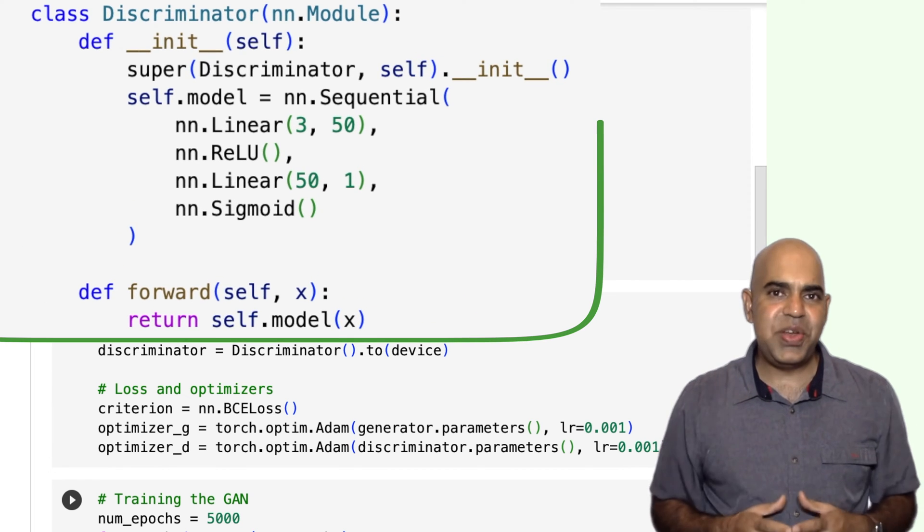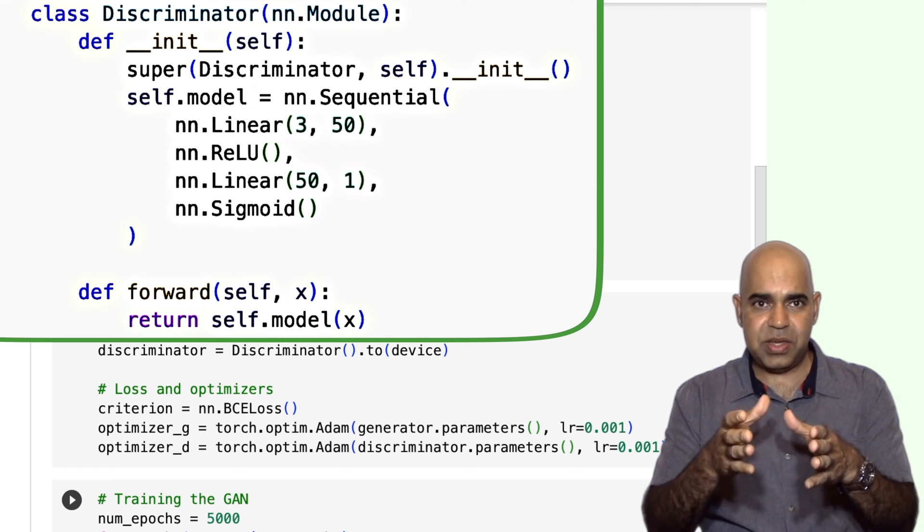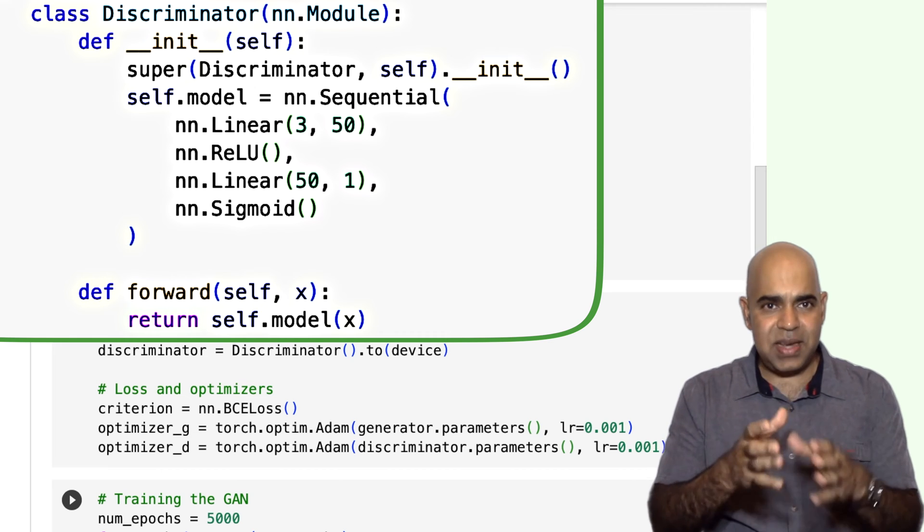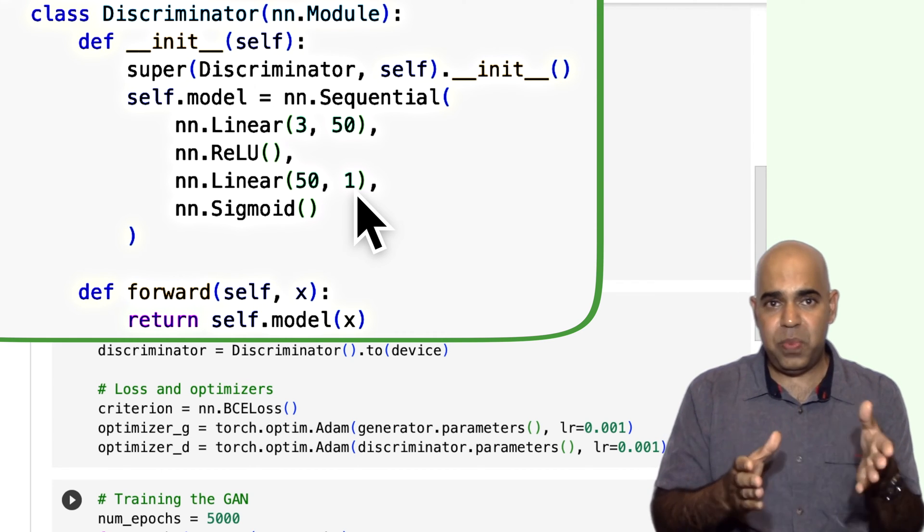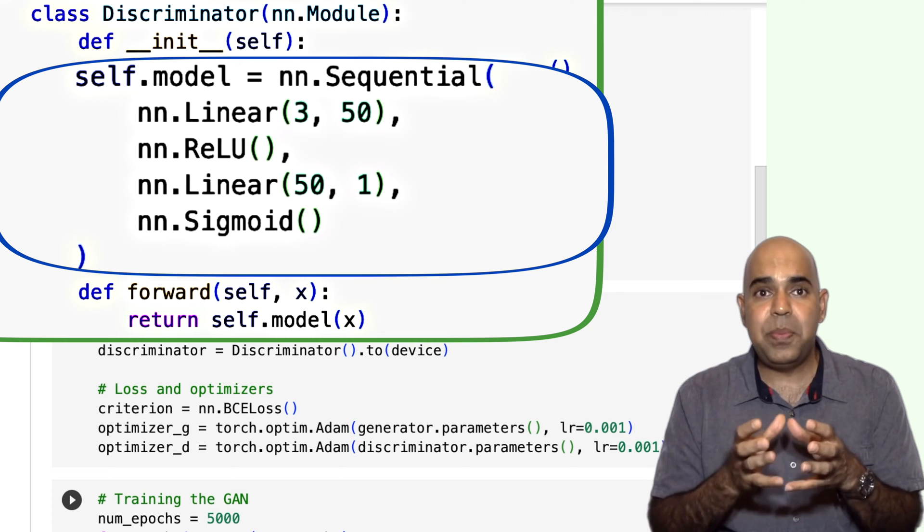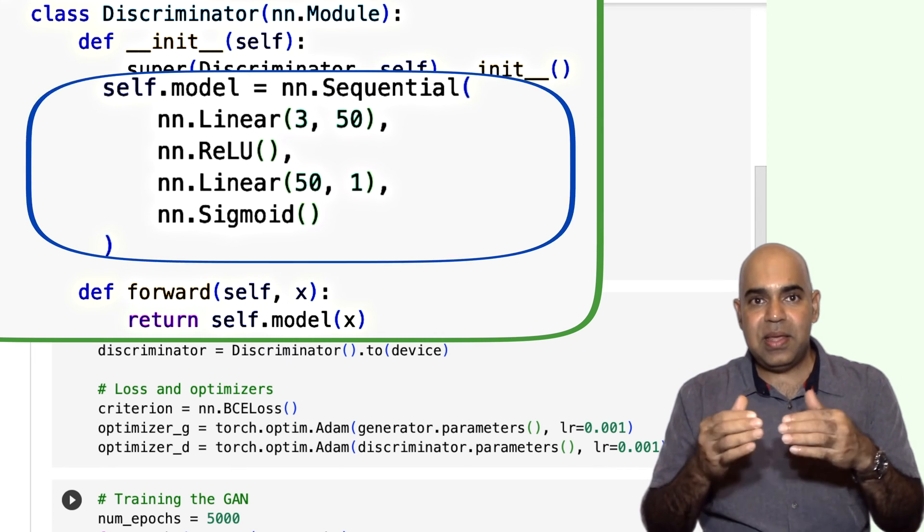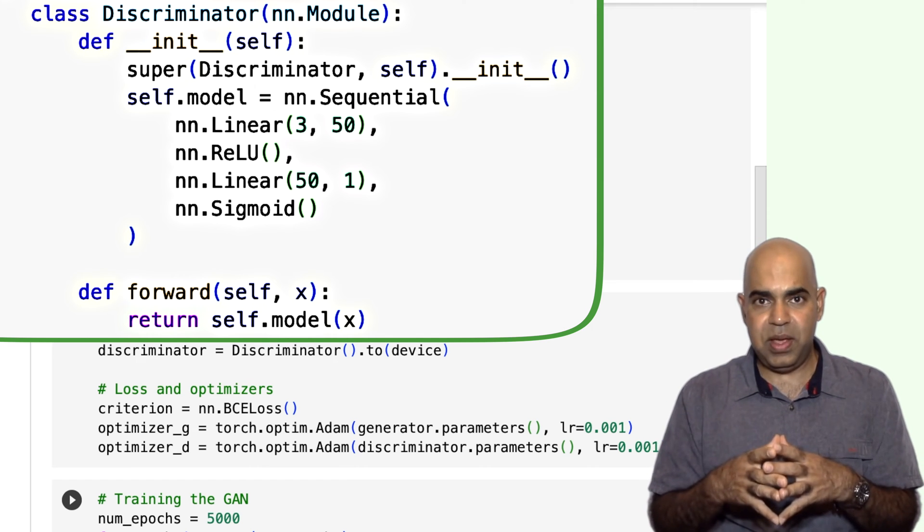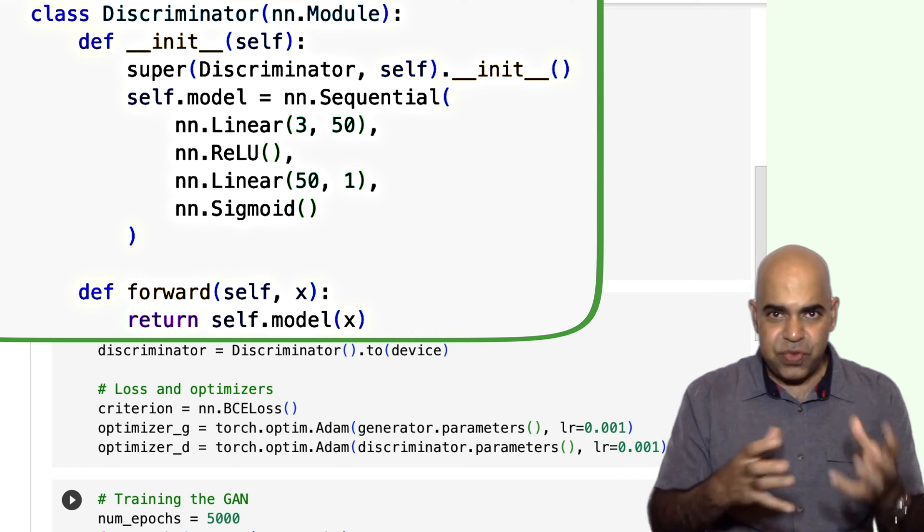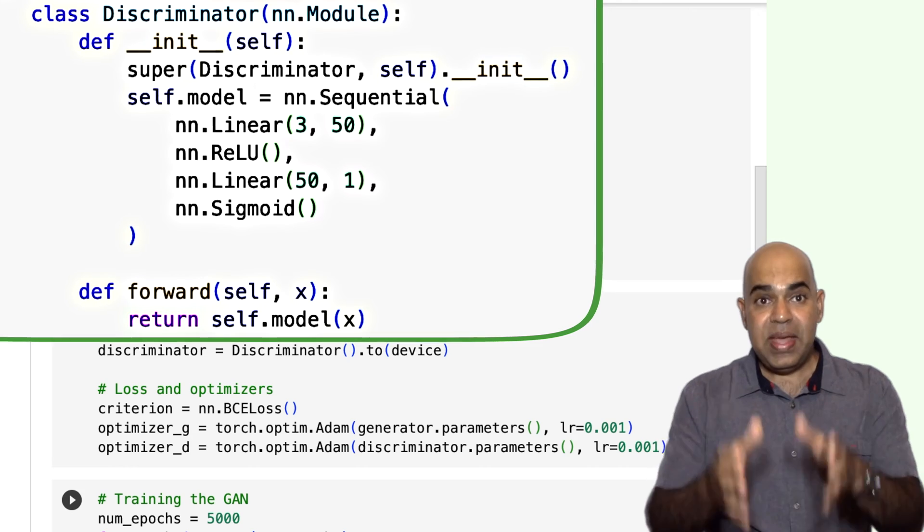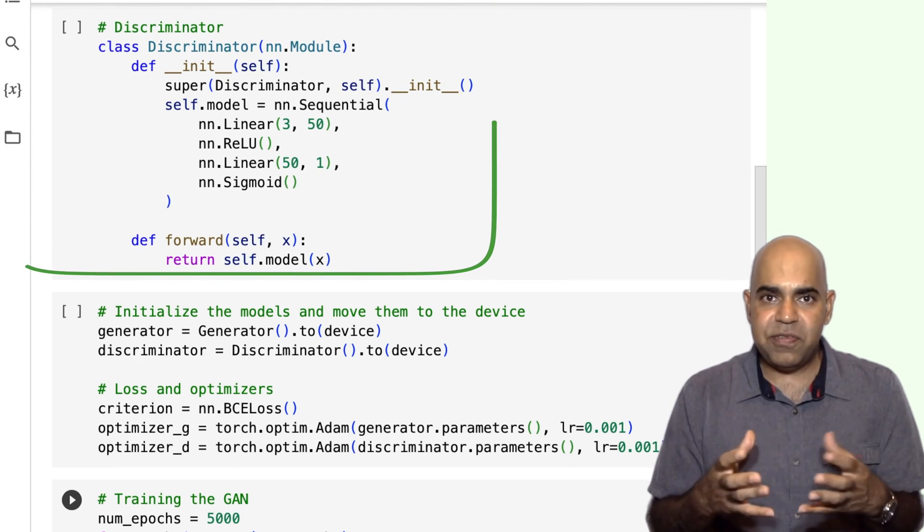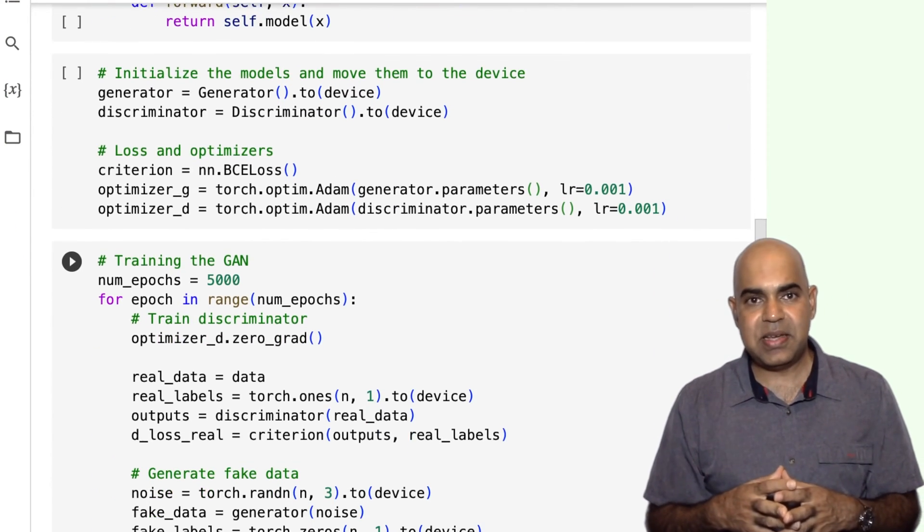Here is the discriminator. My discriminator has a similar architecture like the generator, but with a critical difference in the output layer. It has an output layer with a single neuron followed by a sigmoid activation function. This design choice means that the discriminator outputs a probability indicating how likely the input data is to be considered real as opposed to be generated. The discriminator's role in a GAN is to differentiate between real and generated data. Given an input vector or a data point, it outputs a probability indicating its belief that the data point is from a real data set.